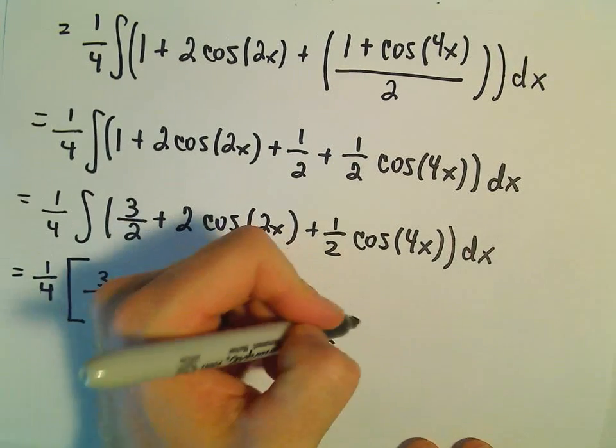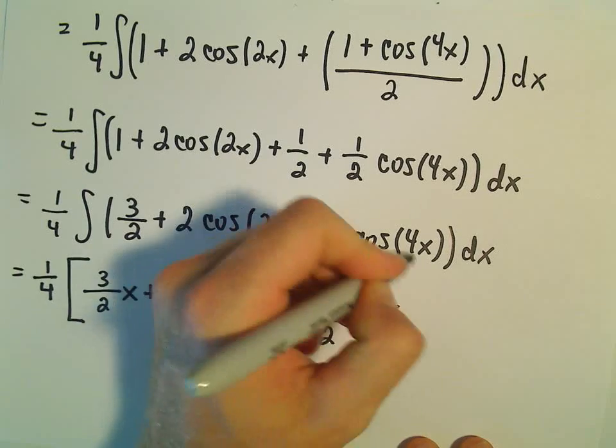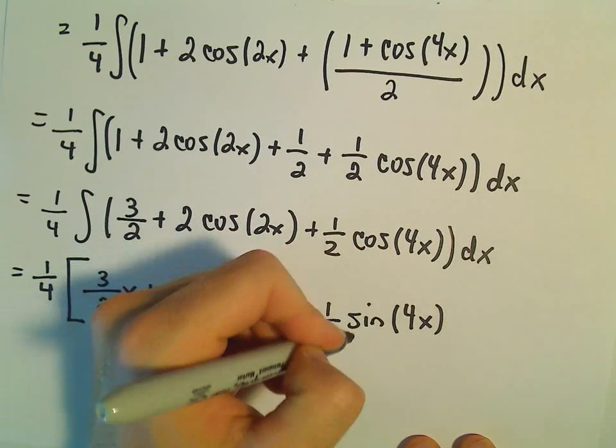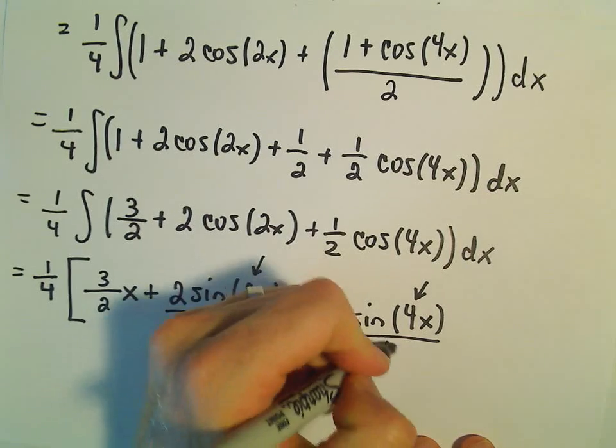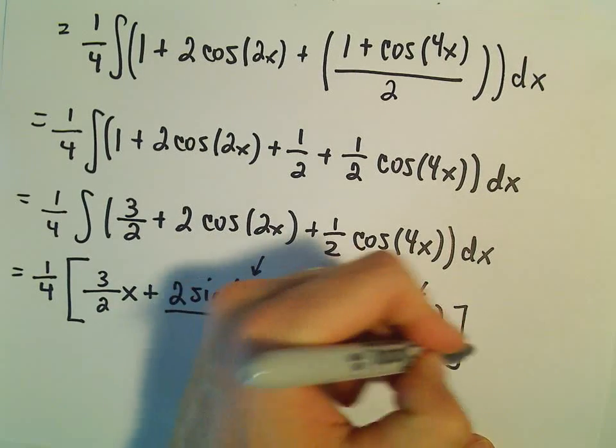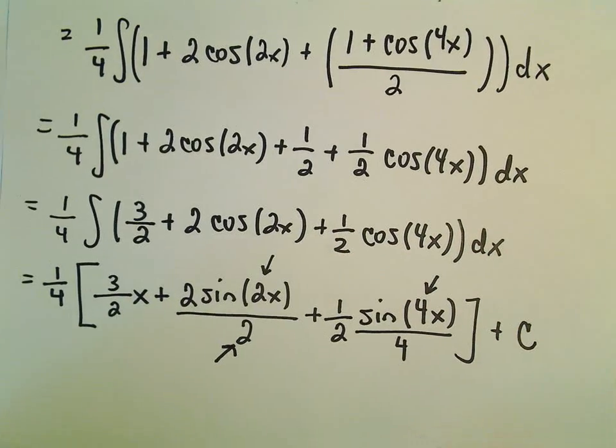The antiderivative of cosine is sine. Well, it will be of 4x. And then again, we divide by the number, the coefficient on the x, which will be a 4. And then we've got our plus c left over.